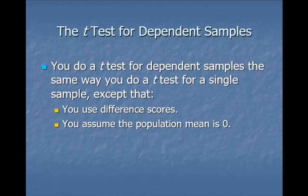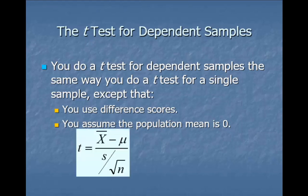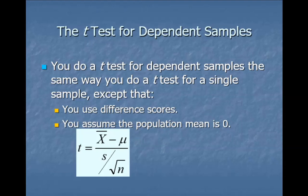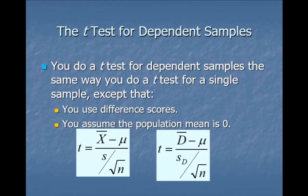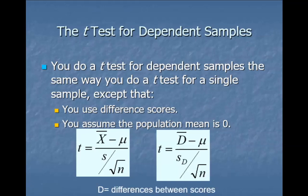So we're going to assume there's no difference until we prove otherwise, and assume the population mean we're comparing to is zero. For the one-sample t, the formula was: x̄ minus μ divided by the standard deviation divided by the square root of n. For the dependent t, it looks very similar — instead of x̄ we use d̄ (d-bar), which is the mean difference. So it becomes: d̄ minus μ, divided by the standard deviation of the difference scores divided by the square root of n.